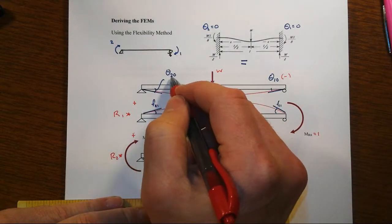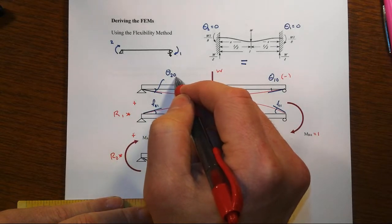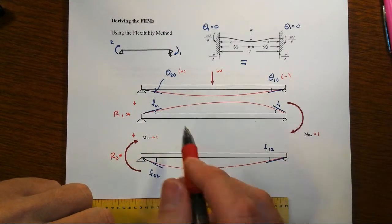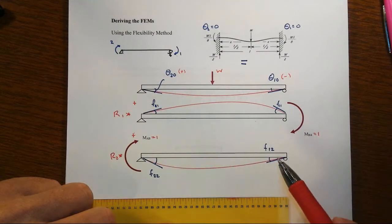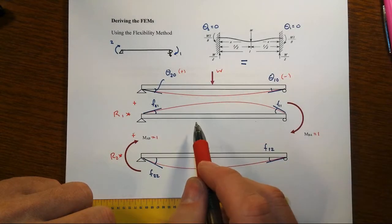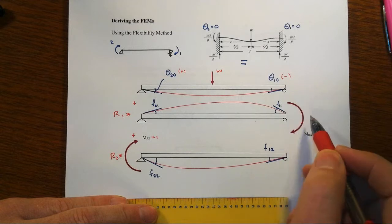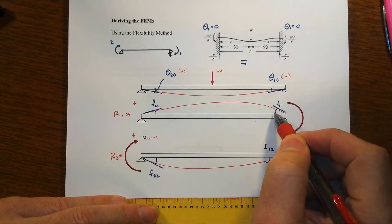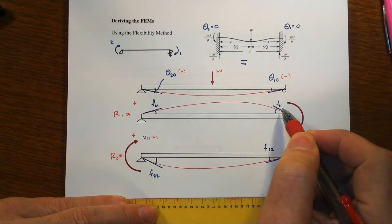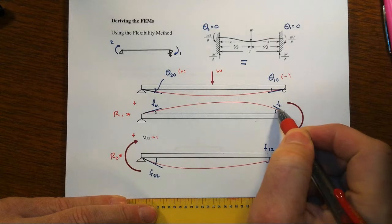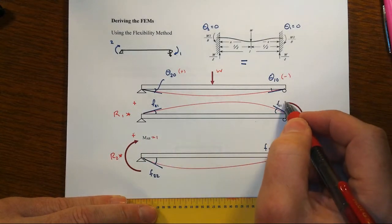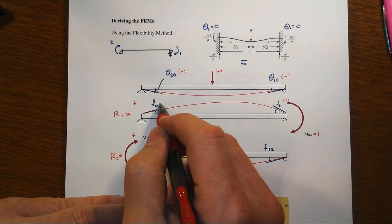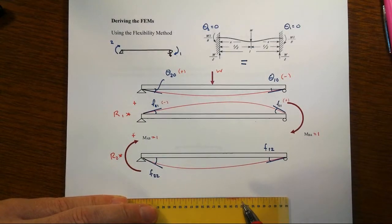Theta_2_0 is the rotation that happens at the second degree of freedom in the primary loading scenario. It's going to be a positive value corresponding with our sign convention for degree of freedom 2. Then we sequentially put unit loads on. For the first degree of freedom, we put a 1 unit load on—that would be 1 kip-foot, for instance. We calculate the rotation that goes with that degree of freedom. It's a flexibility coefficient because the load is 1, so that's F_11. At the other end, that would ultimately be a positive value. F_21 goes the other direction—it would actually be some sort of a negative value.